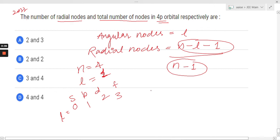Now, putting in the values, we get 4 minus 1 minus 1 equals 2. So the radial nodes are 2, and the total nodes equal n minus 1, which is 3.